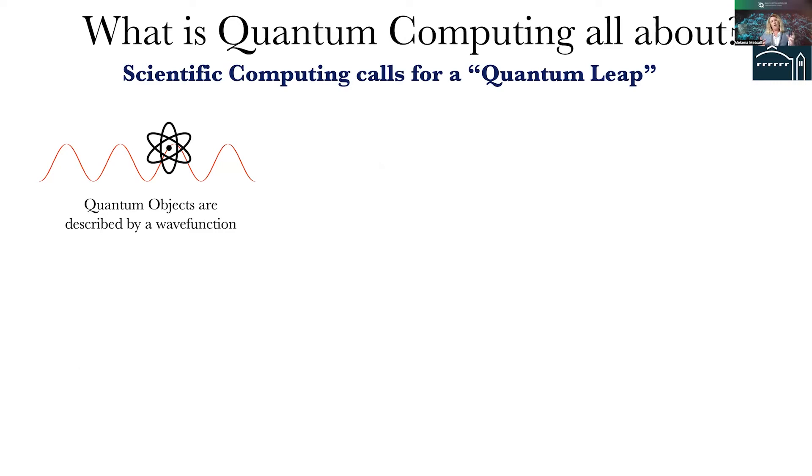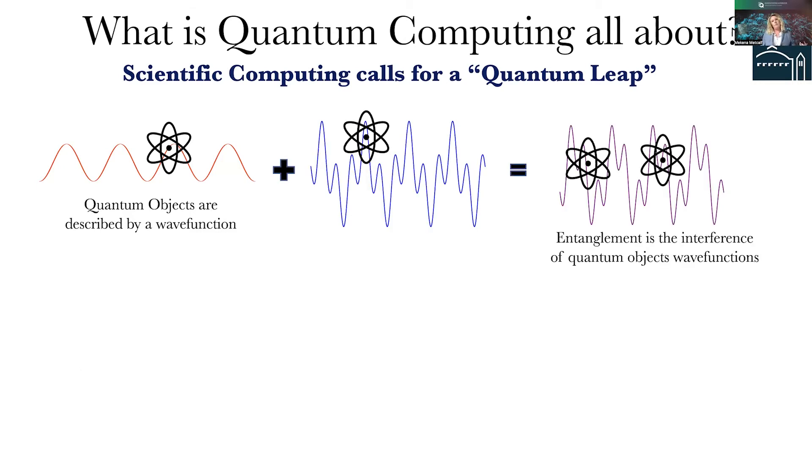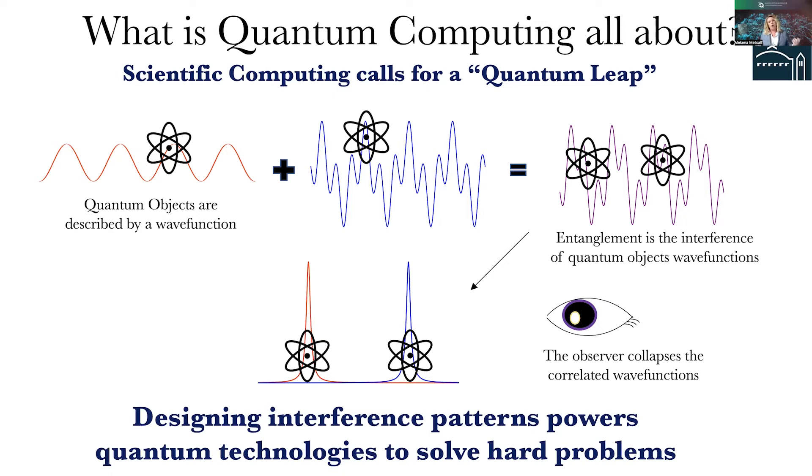So if we think about how atoms behave, they behave very differently than the things that we interact with in our everyday lives, because in fact, they behave as waves and they're able to spread themselves out over space and time. But what's really cool is if I have two atoms and they're described by two different wave functions, the wave functions of these atoms interfere in such a way that they become correlated. And this is what we call entanglement.